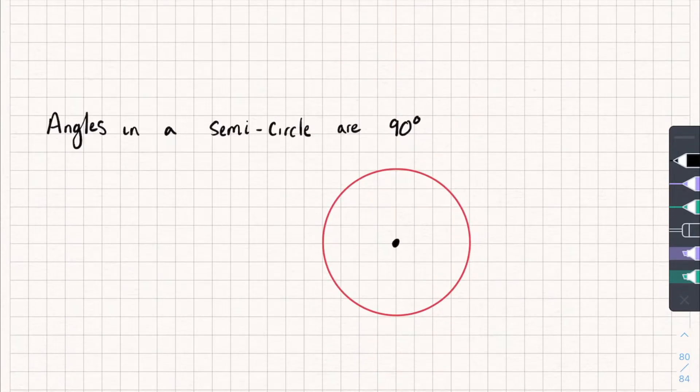The next one says that angles in a semicircle are 90 degrees, so let me create a semicircle by drawing on a diameter like this. Now any angle that I create, by connecting one side of the diameter, say to the circumference, and then the other side of the diameter to the circumference like this, they meet at 90 degrees, and it doesn't matter where I draw these, they will always meet at 90 degrees like this.